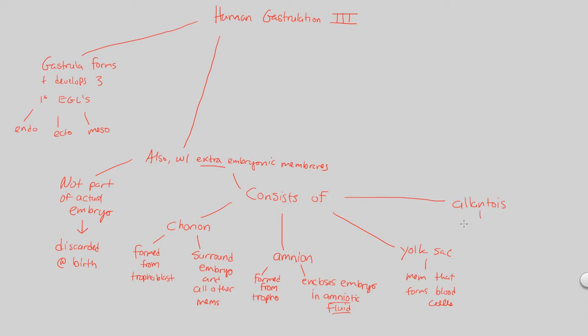There's also the allantois, a structure directly incorporated into the umbilical cord. The allantois forms blood vessels that are necessary for umbilical cord function as we'll see later. So those are our extraembryonic layers.